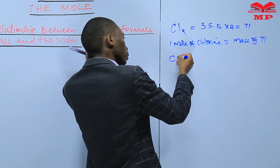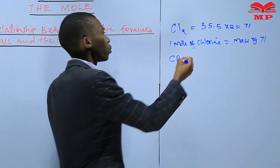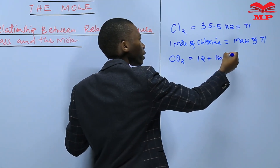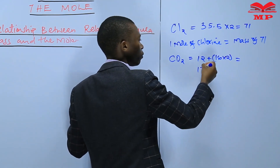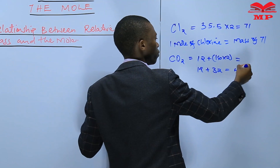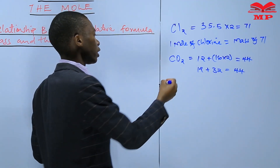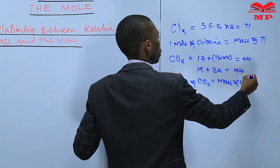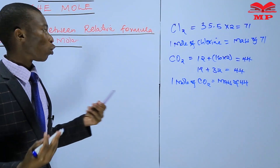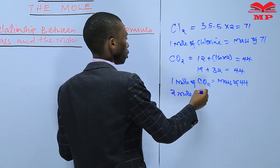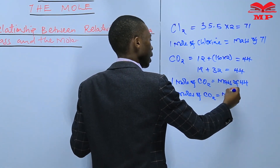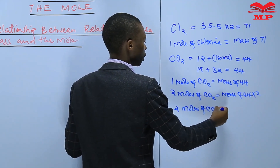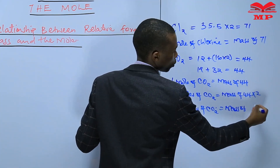The other example we gave was carbon dioxide. Since the mass of carbon is 12 and the mass of oxygen is 16, and there are two atoms of oxygen, therefore 16 times 2. This gives us 12 plus 32, which is 44. Therefore, one mole of carbon dioxide is equivalent to a mass of 44. If you want two moles of carbon dioxide, that will be 44 times 2, which is 88.